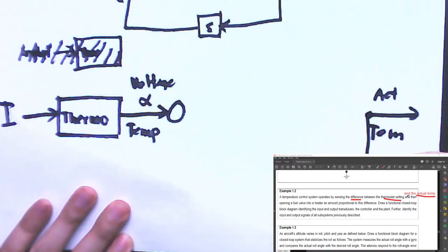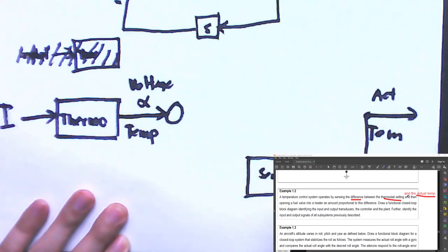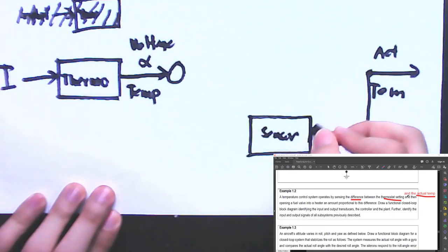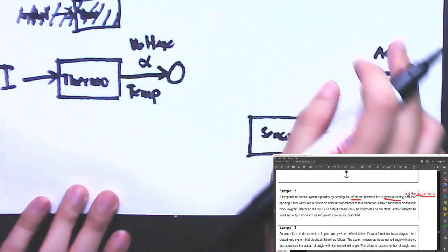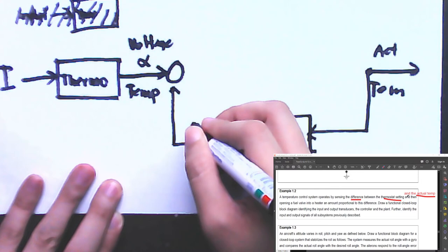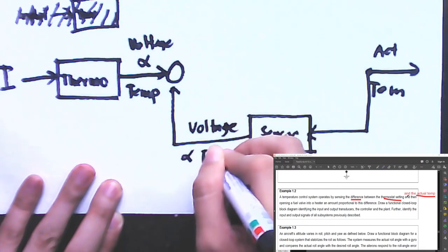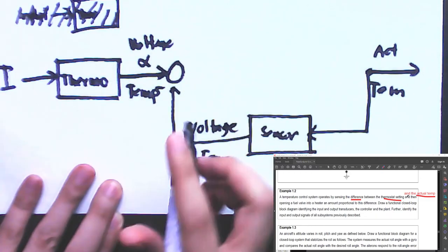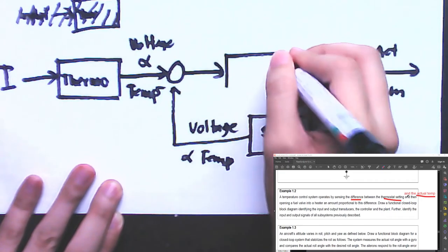The actual temperature is measured by a sensor. We'll generalize it just as 'sensor' since we're not sure exactly which sensor is used, though there are many options — for example, temperature-dependent resistors or any sensor that can measure temperature. This sensor output will also be a voltage proportional to temperature.